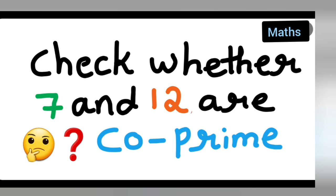Welcome to today's class of mathematics. Today's question is taken from class 6 mathematics, chapter 3, 'Playing with Numbers.' The question is: check whether 7 and 12 are co-prime.